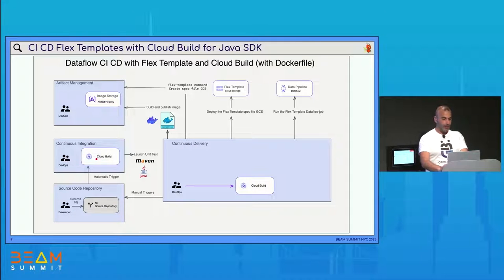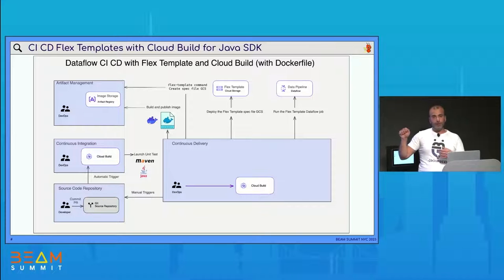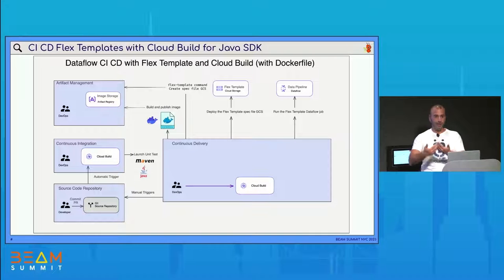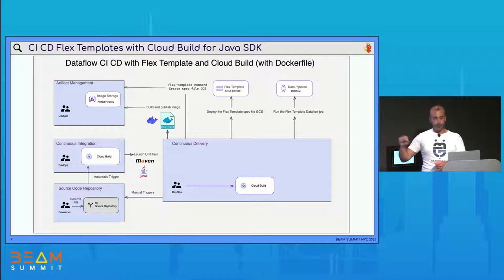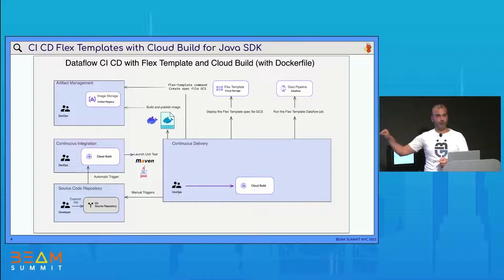For the CI part, we have Cloud Build, which is a serverless tool to apply CI and CD. In this case, I will launch unit tests with Maven via Cloud Build with an automatic trigger. We can launch a Cloud Build job from our local machine if needed, but we can also use triggers instantiated from the Google Cloud console. In this example, I chose to use the trigger approach — when we push modifications to the GitHub repository, an automatic trigger will be performed by Cloud Build to launch unit tests.